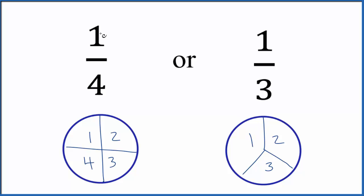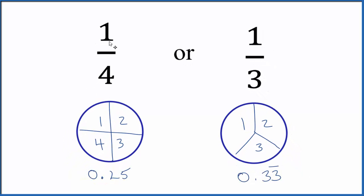We could also take and divide 1 by 4 in a calculator. When we do that, we get... 1 divided by 4, that's 0.25. 1 divided by 3, that's 0.333... We just put this line over the 3 to show it repeats.